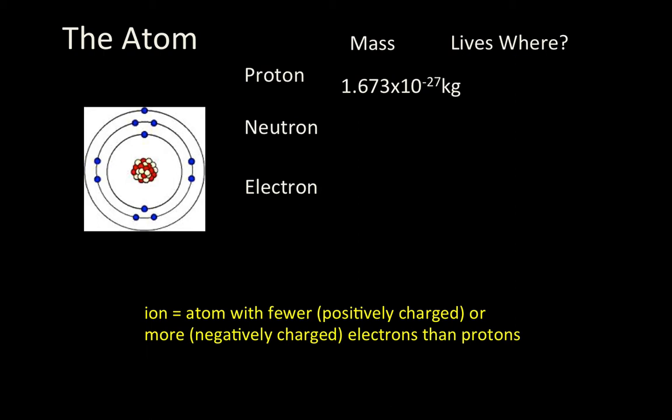Protons actually have a very small mass, 2 times 10 to the negative 27 kilograms, or 0.0000000000000000002 kilograms. But electrons have a mass of 9 times 10 to the negative 31, or 0.00000000000000000000000000000. Did you lose count?